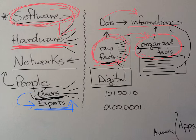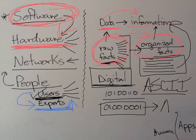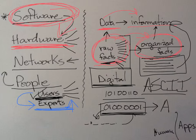Everything in the computer world is stored digitally using ones and zeros. We use some code, like the American Standard Code for Information Interchange — ASCII — in the computer to represent something. For example, in ASCII, those bits represent a capital A. If you hold the shift key and type a capital A in a text editor or Microsoft Word, this is what's actually represented in the computer. If you store it on disk, and it's magnetic storage, those ones and zeros are stored magnetically.